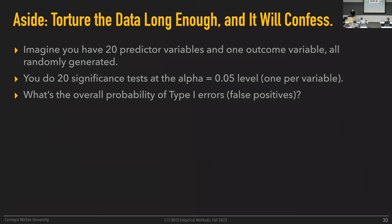Here's an amazing illustration. Imagine you have 20 predictor variables and one outcome variable, and say they're all randomly generated. You do 20 significance tests at alpha equals 5% — one for each variable. The probability of false positives is 5% per test. What is the overall probability for this entire analysis of making at least one type one error — observing at least one false positive? The analysis consists of 20 individual tests, each at 5%.